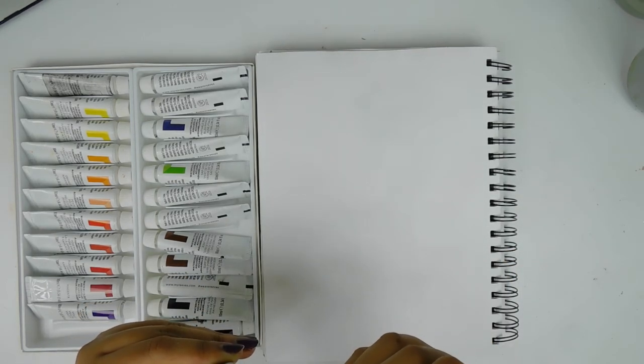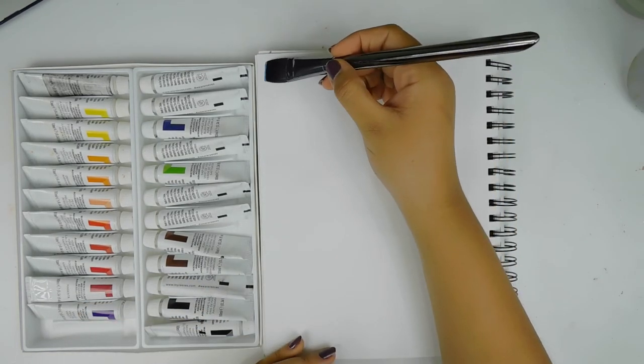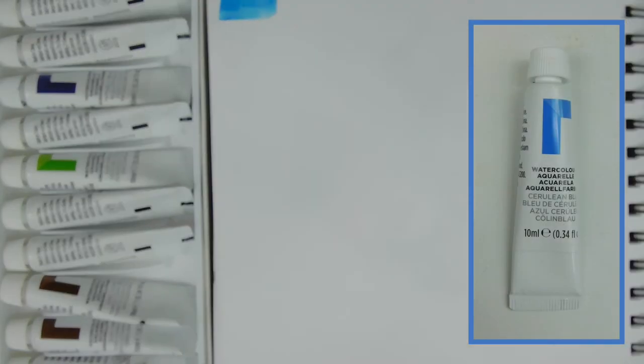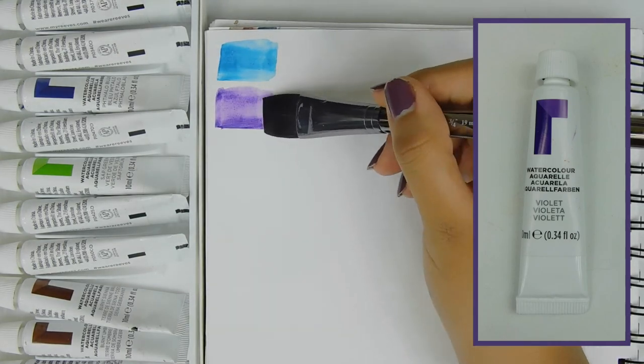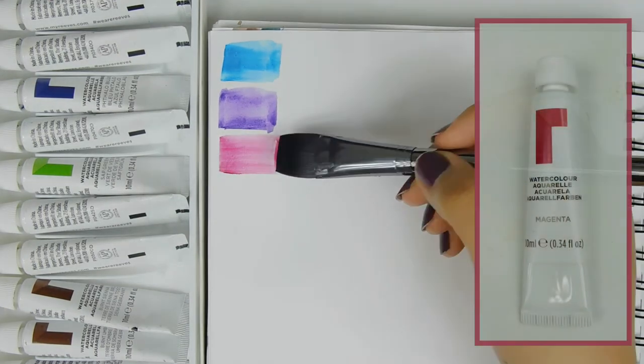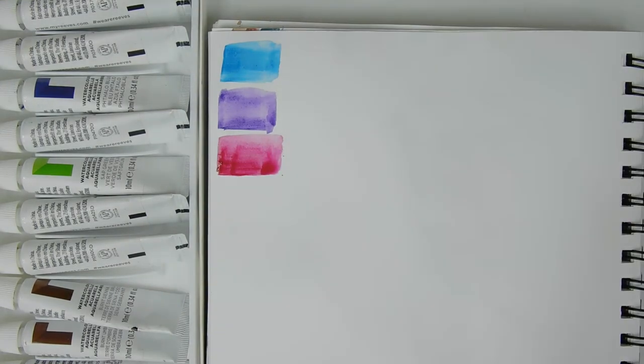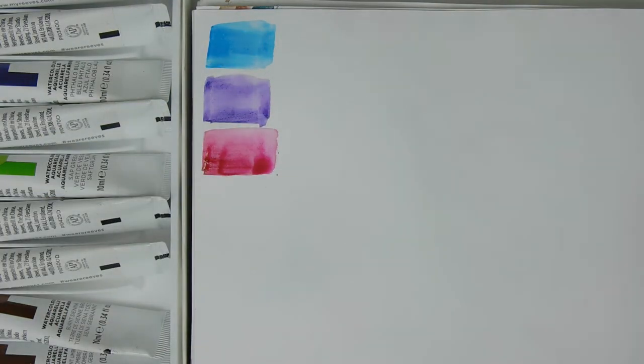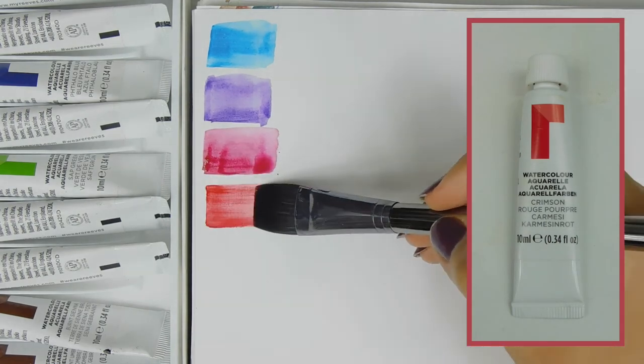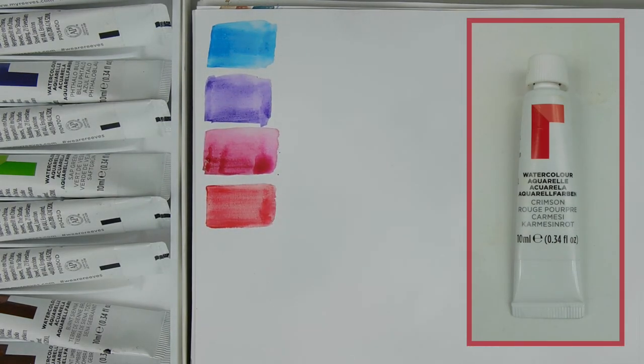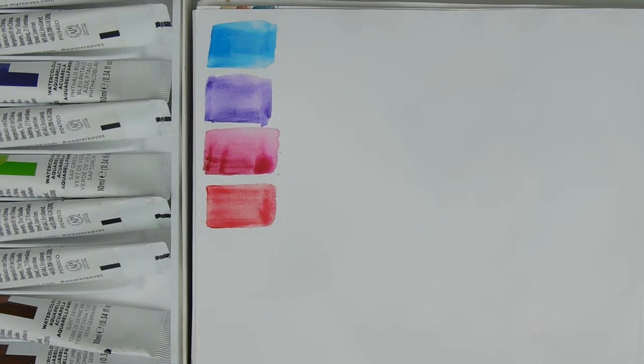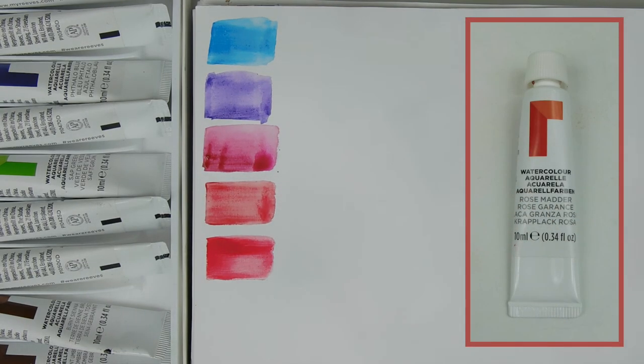So we're starting off with Cerulean Blue and earlier I showed you a really crusty white because I did open up this watercolor set and I hid the white in my pencil case because it's very helpful for making your watercolor more opaque if you need it to be. And just now I was showing you that some of them have separated from their binder so you just have to massage it a little bit and mix the pigment back in with it as best you can.